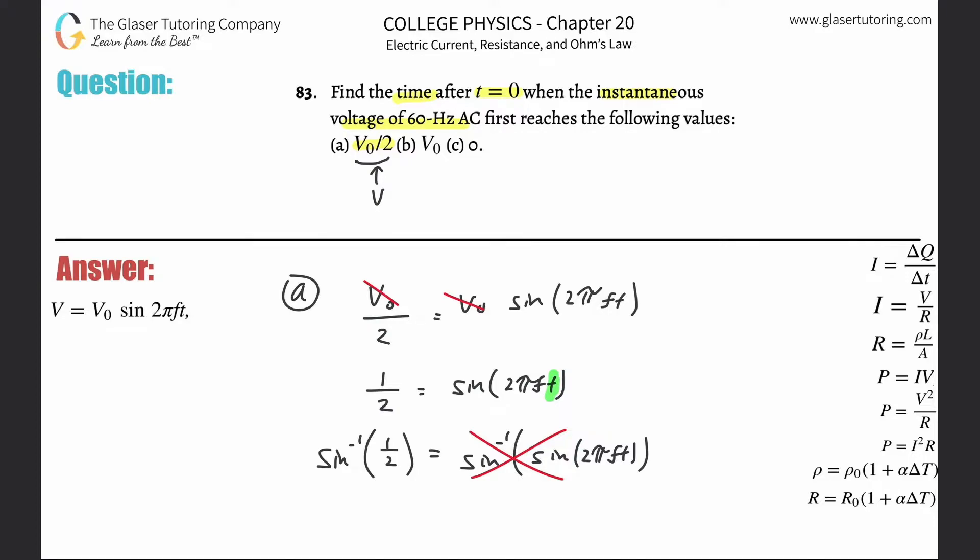So inverse sine of one half or 0.5, it doesn't really matter. It's going to equal now 0.523636 radians. And then this is equal to now 2 pi f t. Now notice if I want to solve this for time, just divide out the 2 pi f.